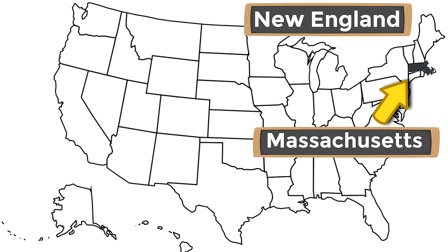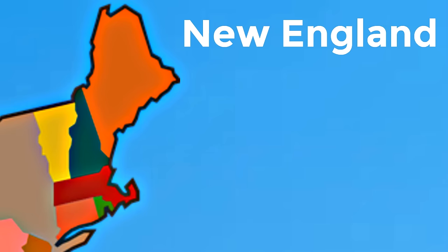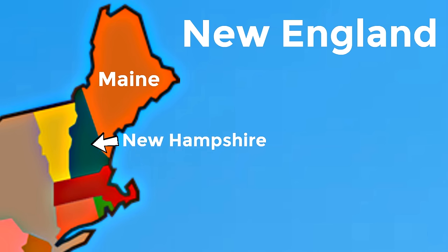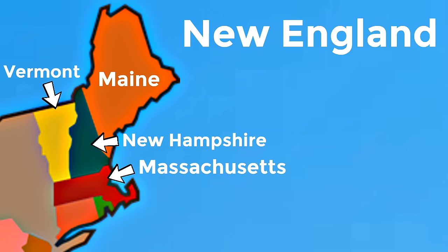Massachusetts is part of a region called New England. New England is made up of the six states in the furthest northeastern corner of the United States. The biggest state in New England is Maine, at the very top. Just below Maine is New Hampshire, then Vermont is right next to New Hampshire.